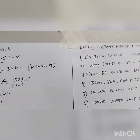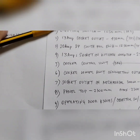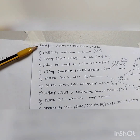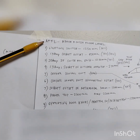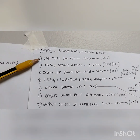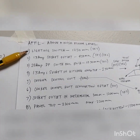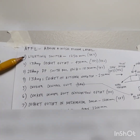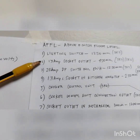Our next topic is about mounting height. When dealing with mounting height we always use AFFL, which means Above Finished Floor Level. Your measurement always starts from the finished floor level upward. For the lighting switch, the standard mounting height especially here in Qatar — and as I said it depends on the project specification — is 1250 mm from the center of the box. Normally we use a 3x3 GI box.